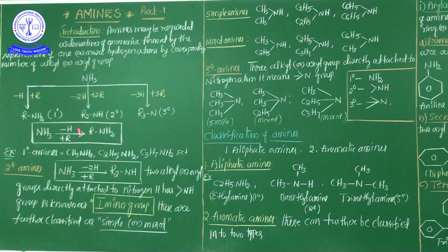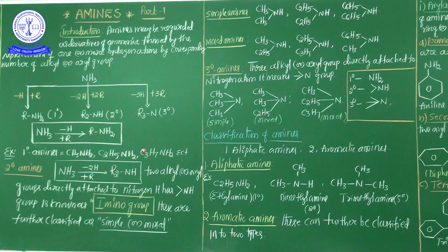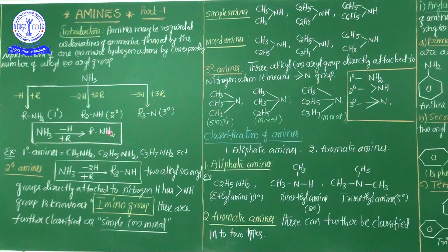In primary amines, either one alkyl group or one aryl group is directly attached to the nitrogen atom — this is a one-degree amine. For two-degree amines, from NH₃ two hydrogens are removed and two alkyl or aryl groups are attached, forming the R₂-NH group. A secondary amine has two alkyl or aryl groups directly attached to the nitrogen atom. The NH₂ group is known as the amino group.